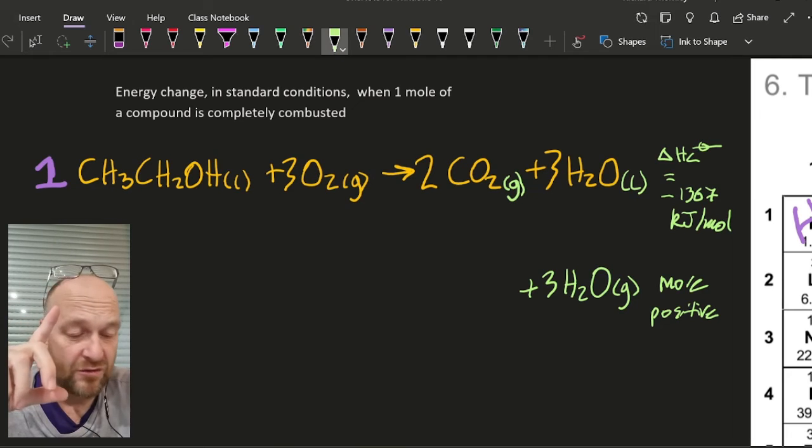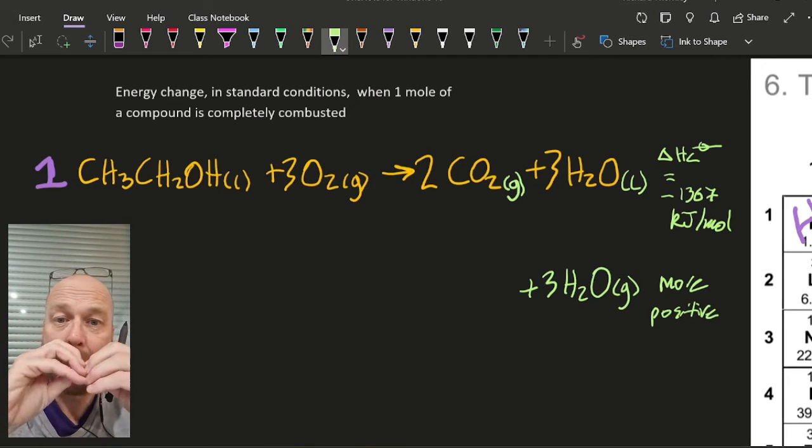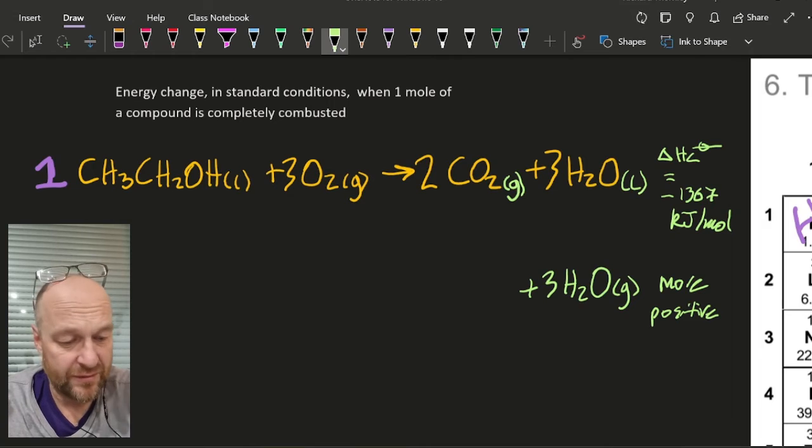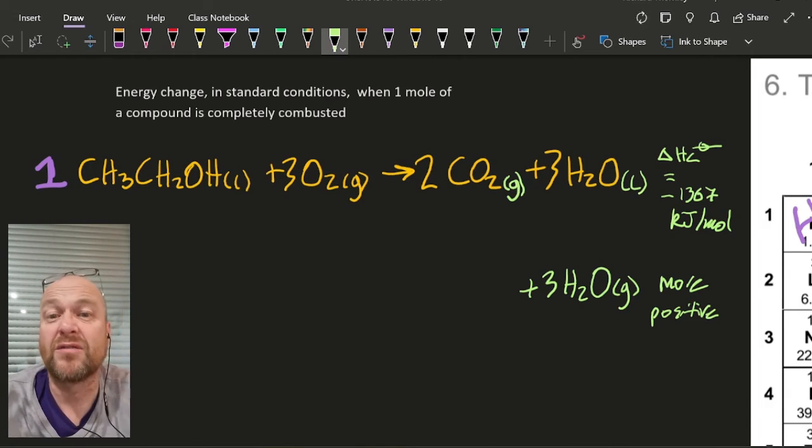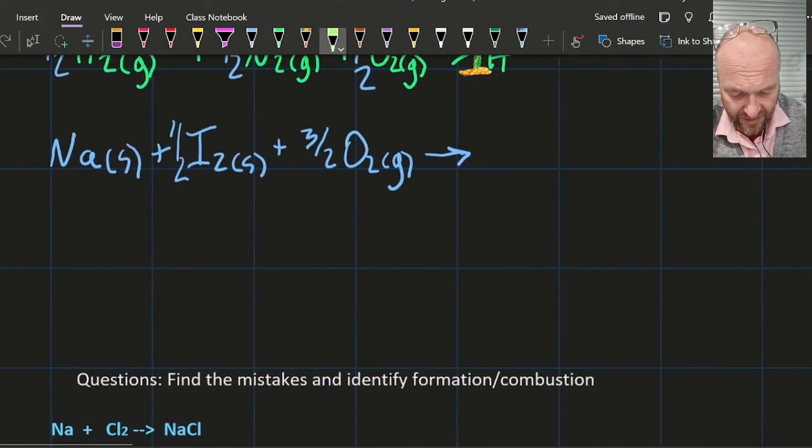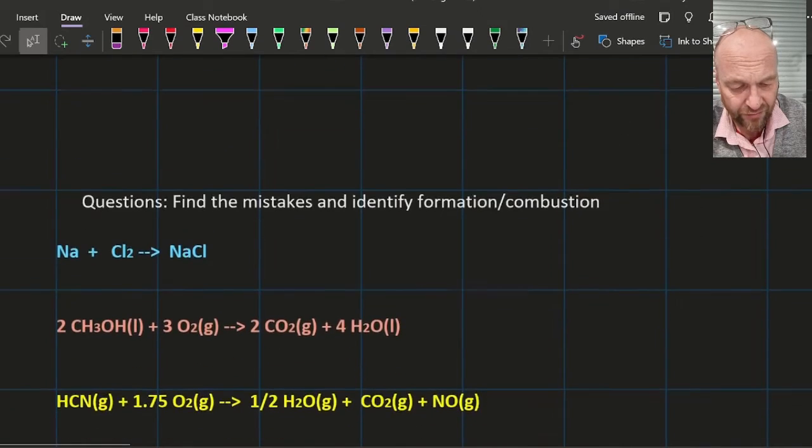Endothermic process. And so maybe the answer would be, I don't know, it might be minus a thousand or something like that. You might have to do the maths to create data. Finally, there's mistakes in identifying this as formation or combustion. Maybe pause the video. You didn't pause the video.